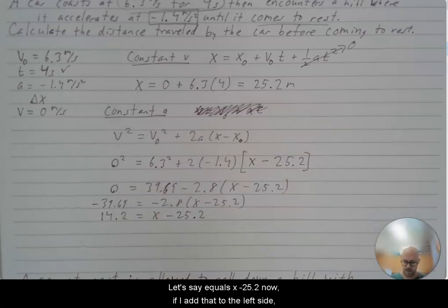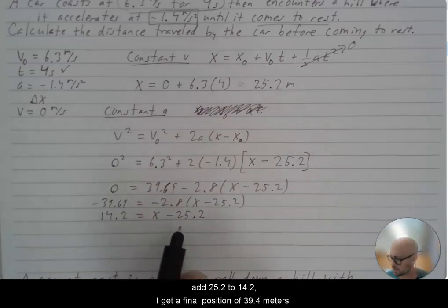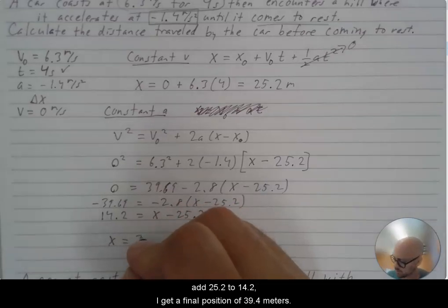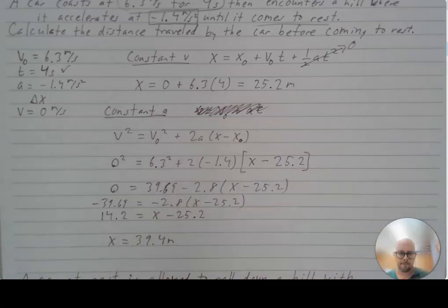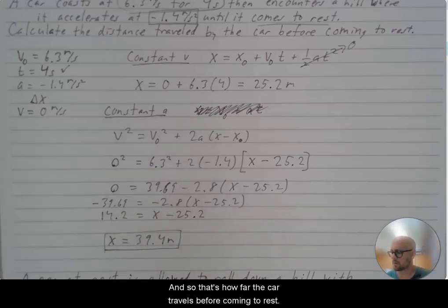Now, if I add that to the left side, add 25.2 to 14.2, I get a final position of 39.4 meters. And so that's how far the car travels before coming to rest.